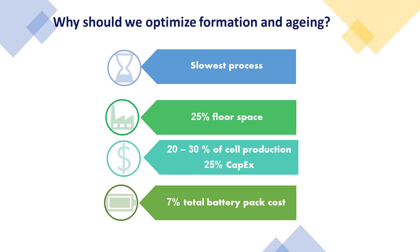So why should we optimize formation and aging? Formation can take between 24 hours to one week, whereas aging could take up to two weeks, making this the longest and slowest process in cell production. Formation not only takes more floor space but uses expensive, precise charging electronics and environmental chambers, which means a huge capital and operational cost.